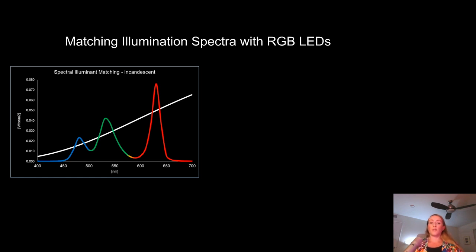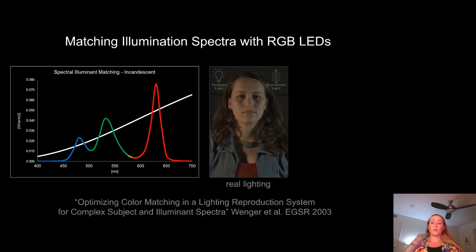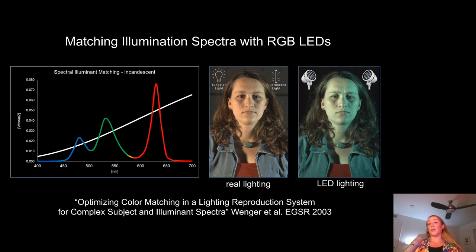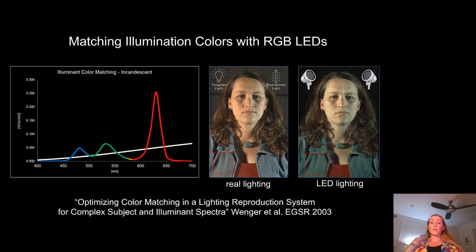To visualize what this meant for color rendition, Wenger et al. demonstrated that trying to match both a tungsten and fluorescent light source using only RGB lighting didn't work well in practice. In the demonstration image, the subject is lit from image left with a tungsten bulb and image right with a fluorescent bulb. The reproduction of that illumination using RGB LEDs — where the goal was to match the spectra in a least-squares sense — really didn't go very well. Even trying to match the color of the lighting rather than the spectrum, the colors still don't match, most obviously for the denim jacket but also for skin tones.